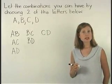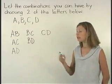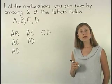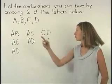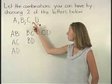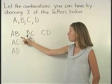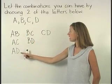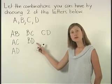All of the combinations that begin with D have already been listed, so the combinations with two letters from the letters A, B, C, and D are AB, AC, AD, BC, BD, and CD.